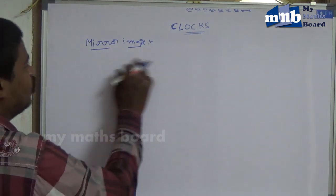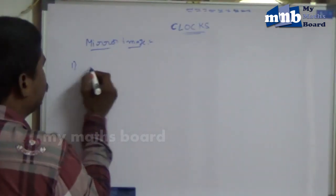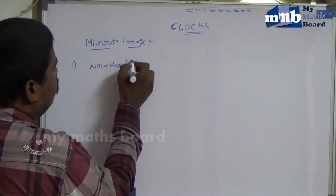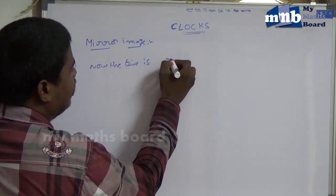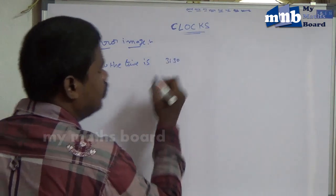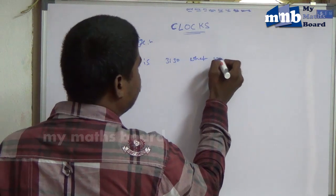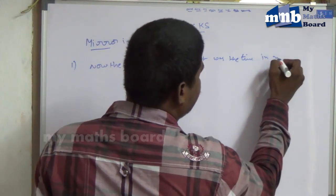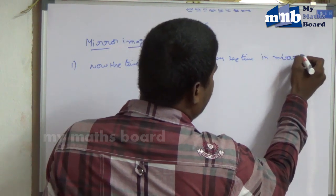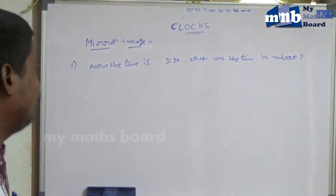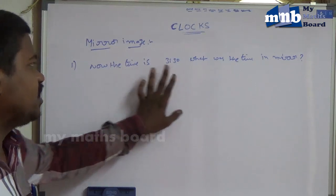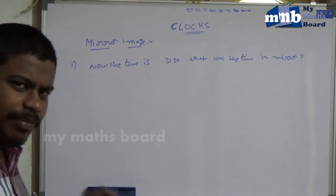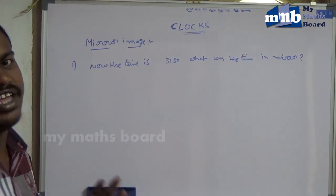Now we will discuss about the mirror image. First question: the time is 3:30. What is the time in the mirror? That is the question. The question asks: if the present time is 3:30, what was the time in the mirror?